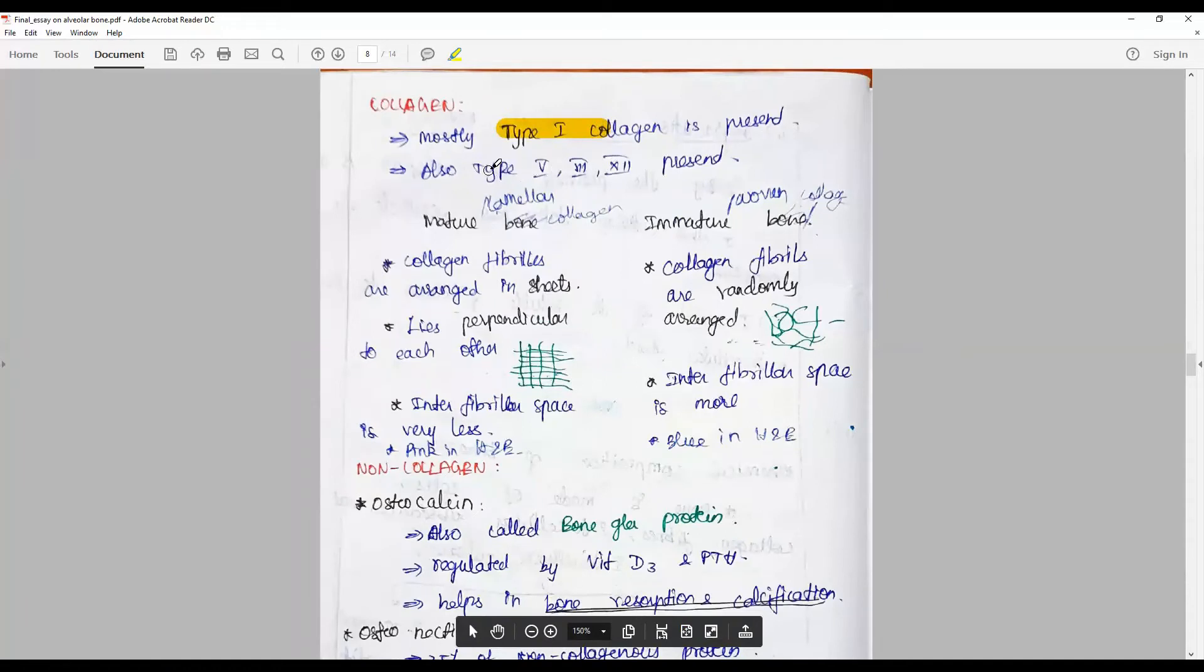Collagen: How is the collagen distributed? Mostly type 1 collagen is present in the bone. Other traces of type 5, 7, 12 are also present. The lamellar or mature bone has collagen fibrils arranged in sheets, whereas immature or woven bone or newly formed bone has collagen fibrils randomly arranged. They lie perpendicular to each other. Here random interfibrillar space is very less.